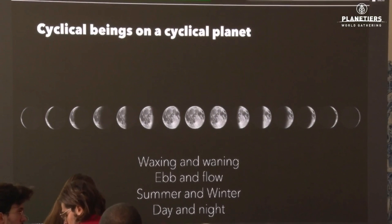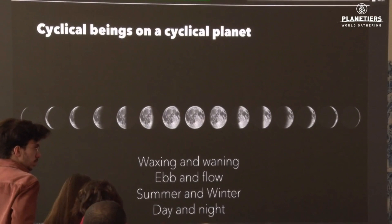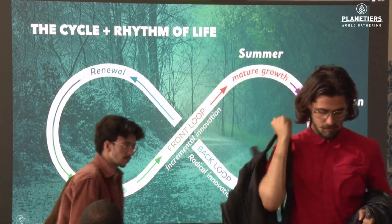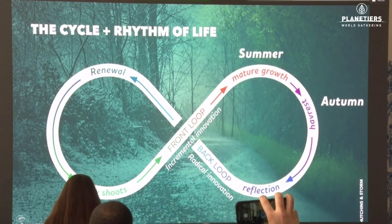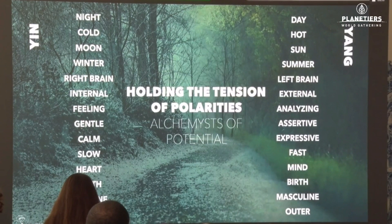We are cyclical beings on a cyclical planet, and we cannot force ourselves into constant performer mode. We've grown up in a culture where we falsely believe we can always be in spring and summer — constantly performing, executing, generating great ideas, presenting keynotes. We don't allow ourselves a restorative, regenerative autumn and winter energy, where we integrate new wisdom. If we do that, we will deplete ourselves and create extractive ripple effects across our spheres of influence.